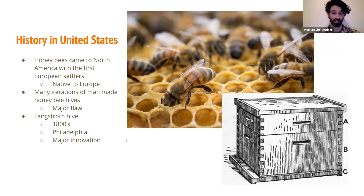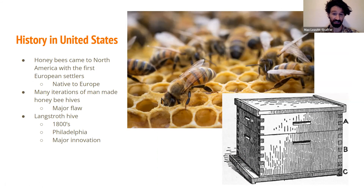There have been many iterations of man-made honeybee hives — some were overturned baskets, some were clay containers, and some were modified wild hives. Although still sometimes used today, all these designs have one major flaw: in order to harvest your honey crop, it was necessary to destroy at least part of the colony, if not its entirety. This was the case for most of apiculture history, until a major innovation in hive design happened in the 1800s in Philadelphia, PA: the development of the Langstroth hive.